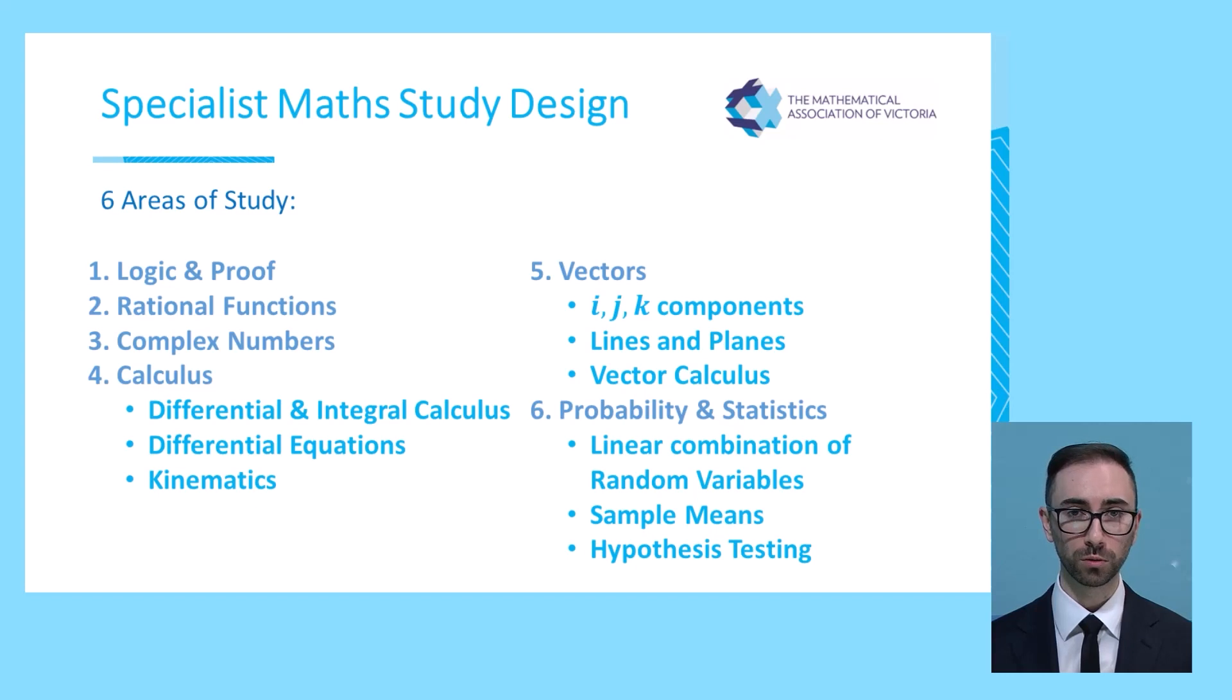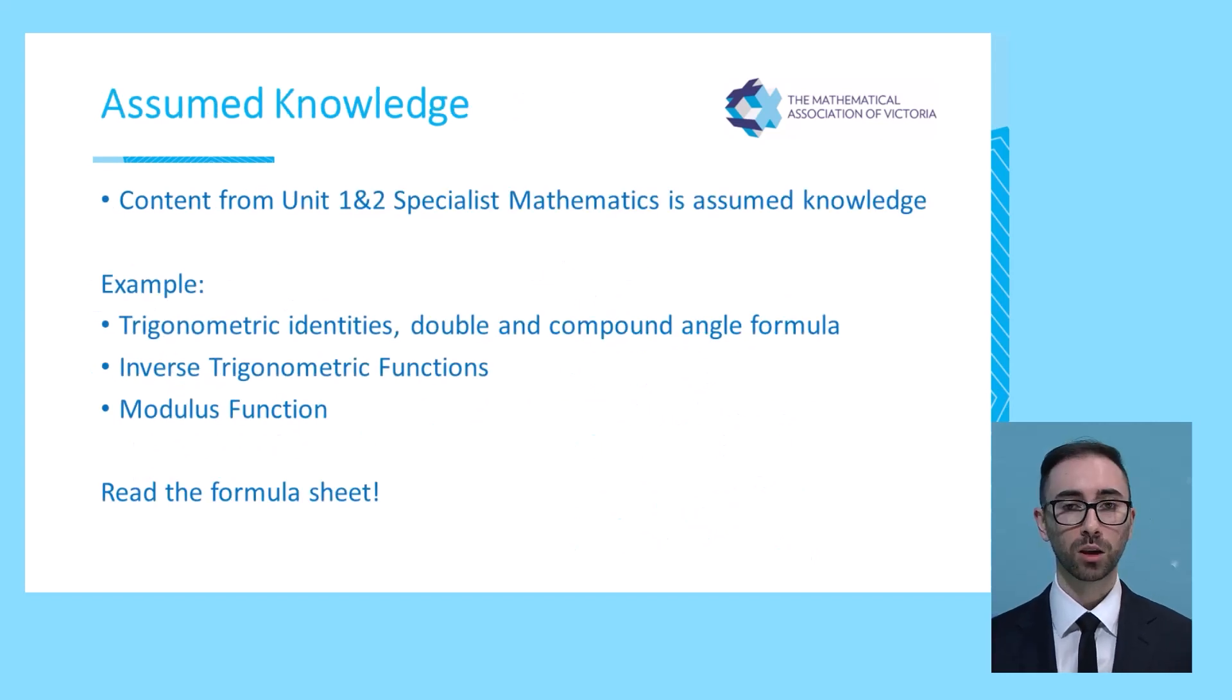We will see all of this material across both exam 1 and exam 2. Content from units 1 and 2 Specialist Mathematics is assumed knowledge, so the materials such as trig identities, double angle and compound angle formula, inverse trig functions, and the modulus function that we covered in units 1 and 2 will also appear in units 3 and 4. Some of this material will appear on the formula sheet, so it is important that we do familiarize ourselves with the formula sheet.